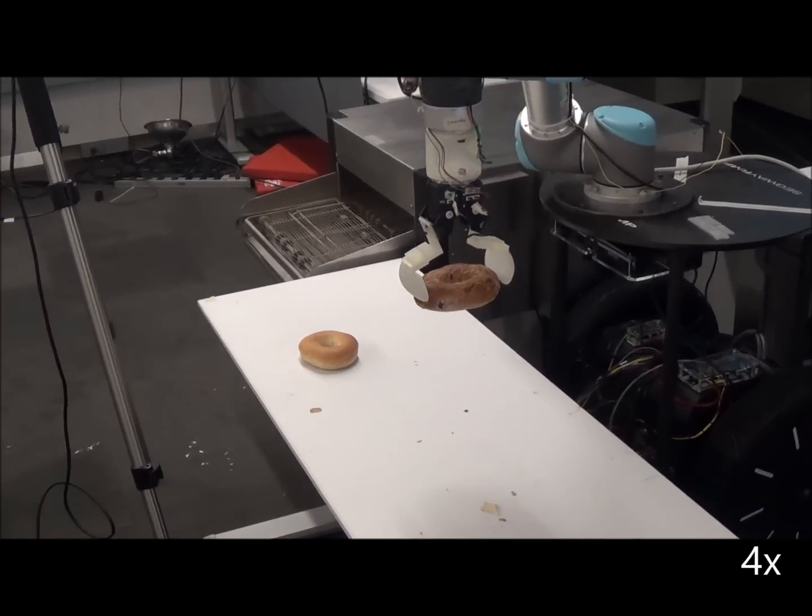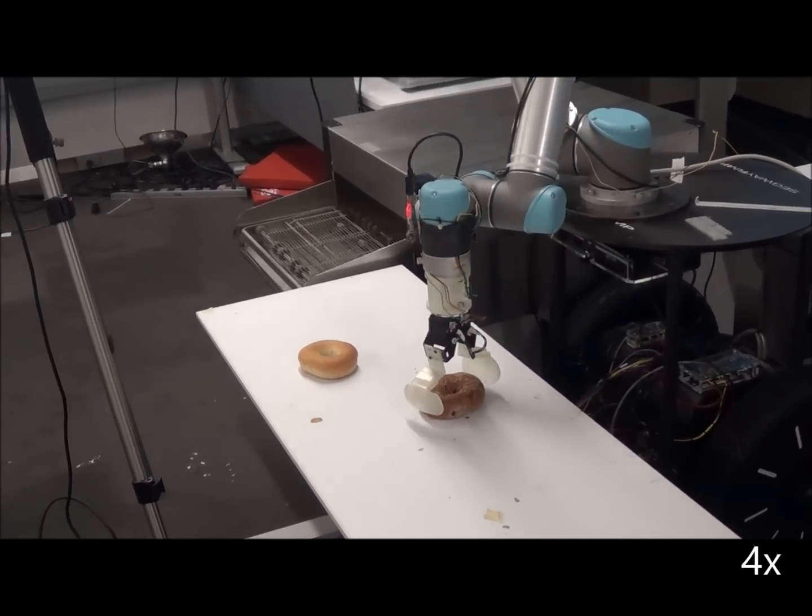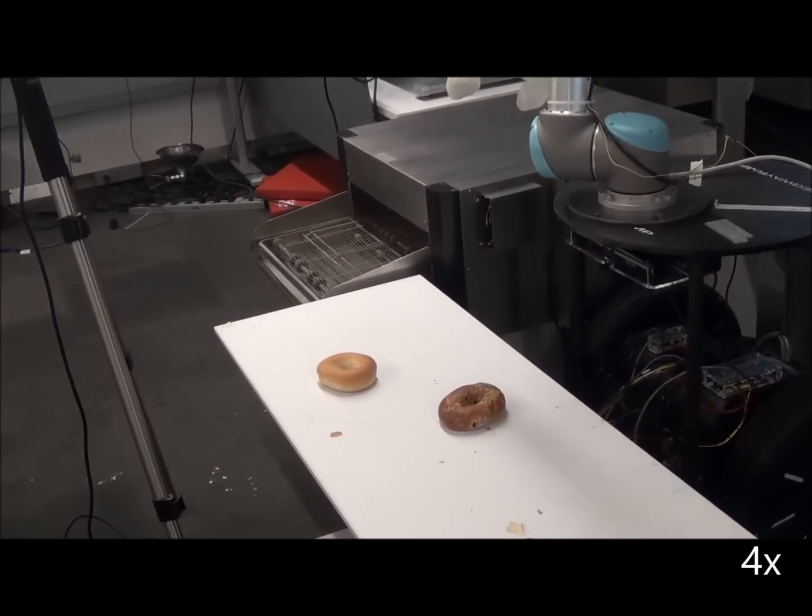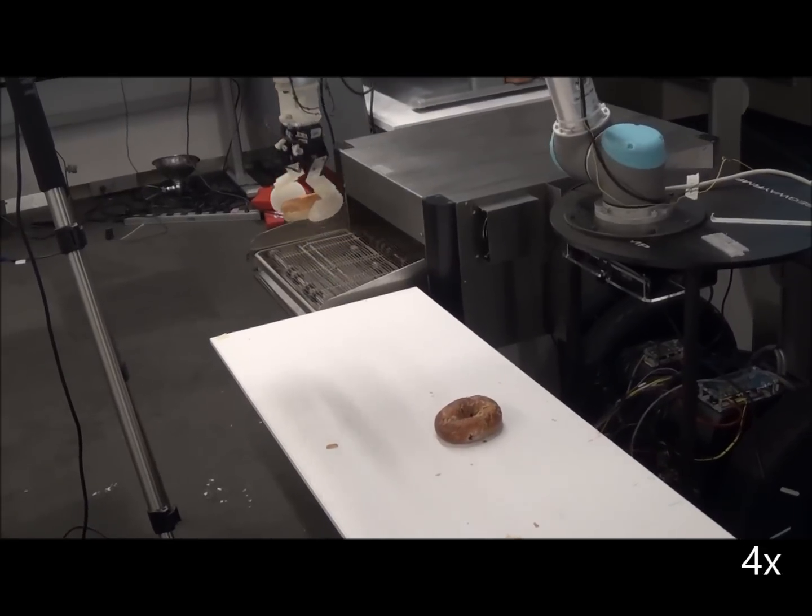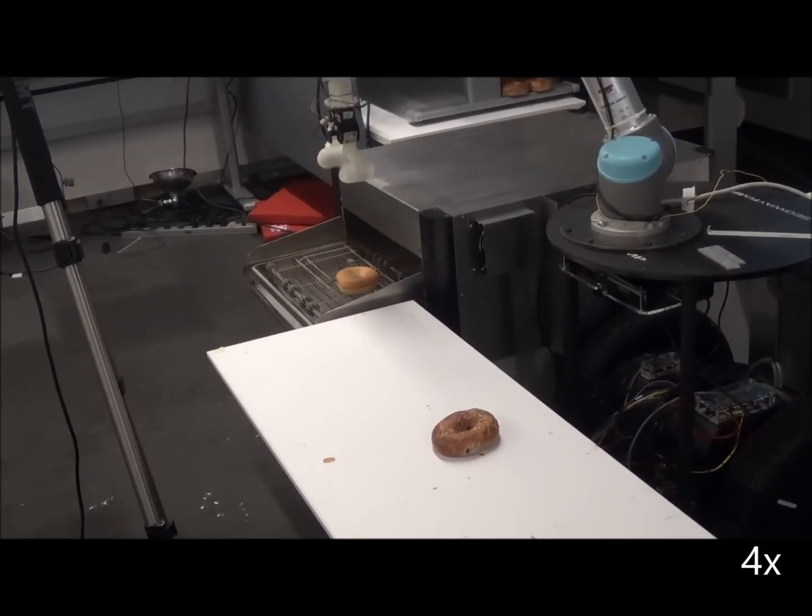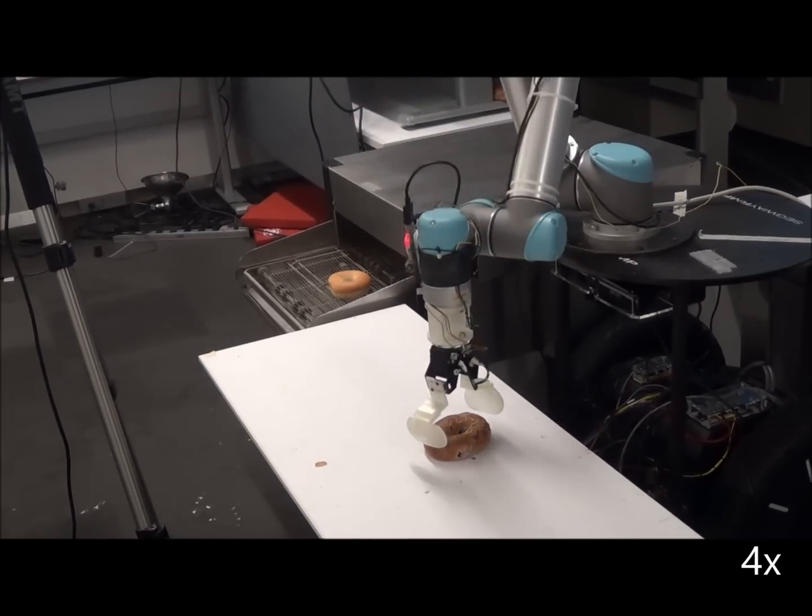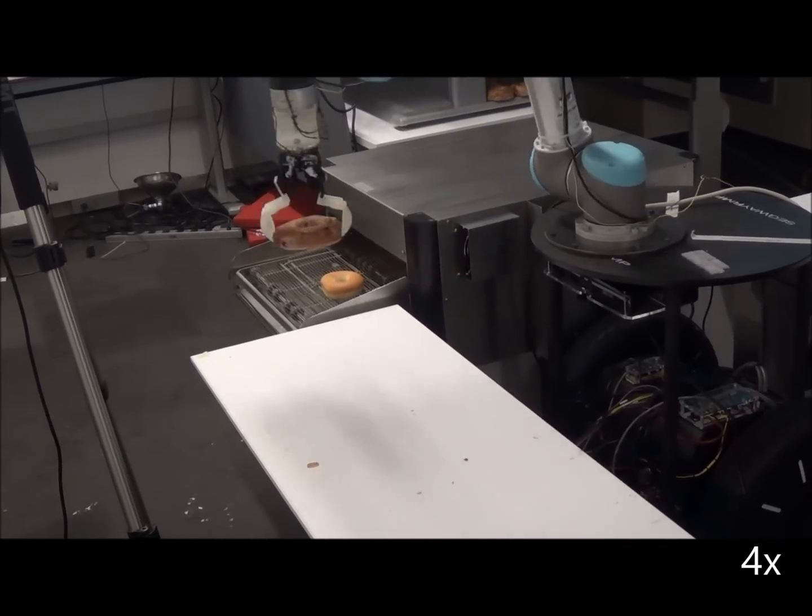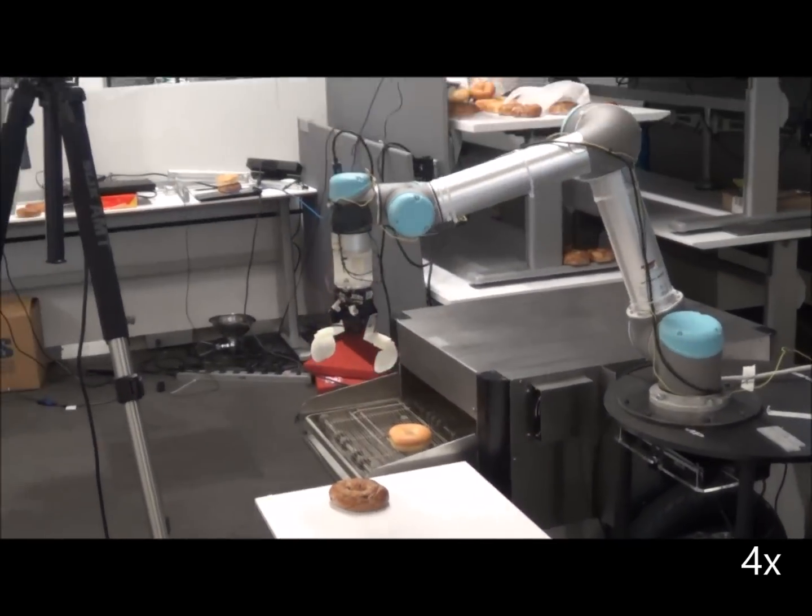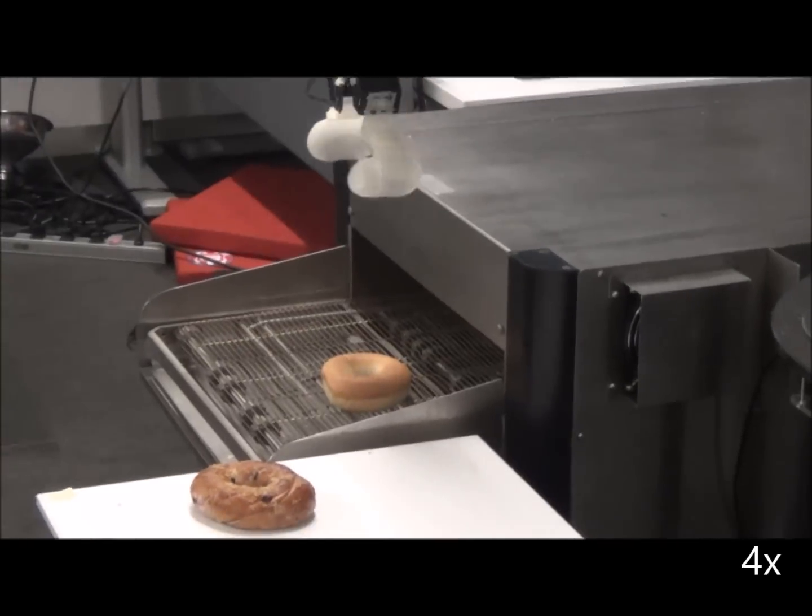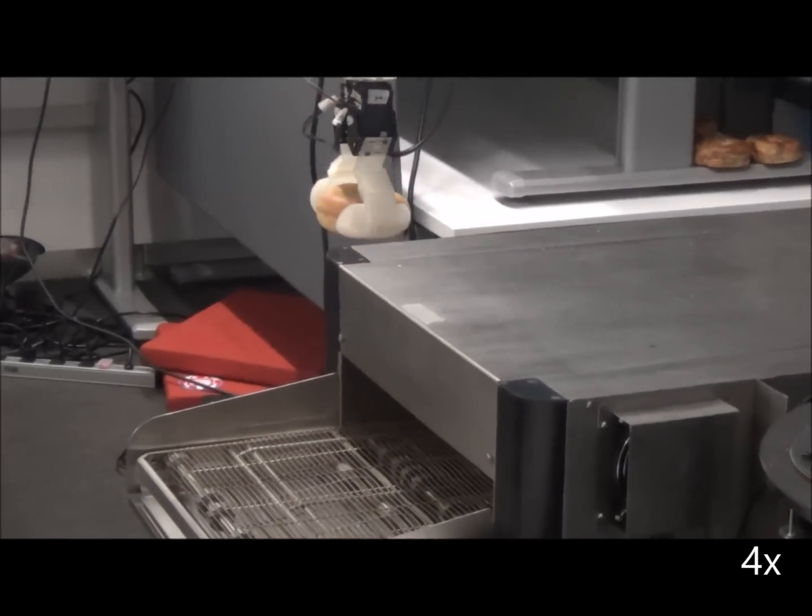Training data is automatically collected by having the baker place bagels at an initial location. The system then repeatedly moves the bagels to random locations in the work areas that were demarcated earlier. After relocating the bagel, camera images are collected together with object pose labels inferred from the robot.